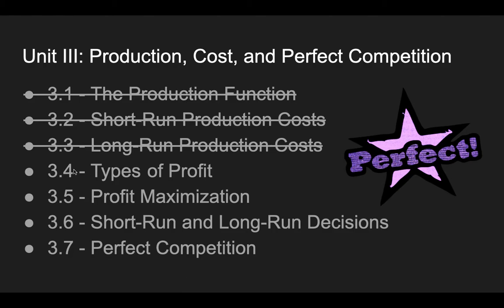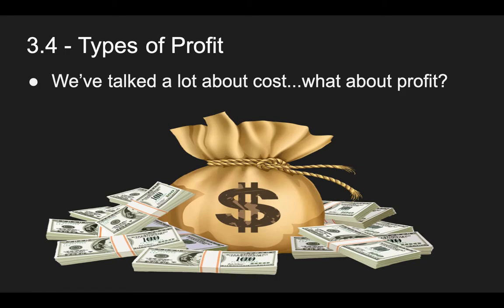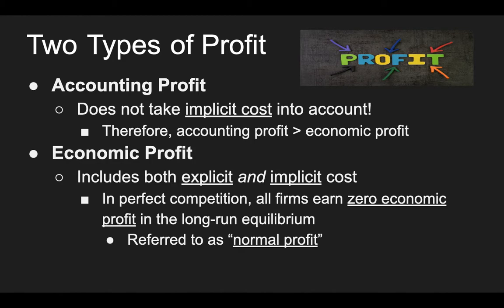Moving on into 3.4 and 3.5 — these are pretty quick, but this is all about profit. We want to talk about two types of profit and then how to maximize profit. There are two types: accounting profit and economic profit. Accounting profit is not one we typically use in this class. When we're talking about the perspective of a firm, we always use economic profit. Accounting profit does not take implicit cost into account — things like opportunity cost.